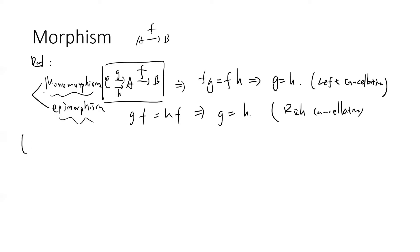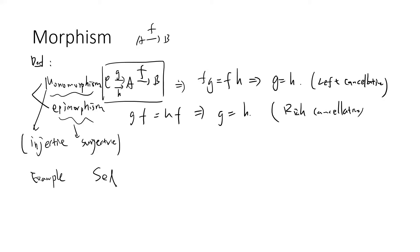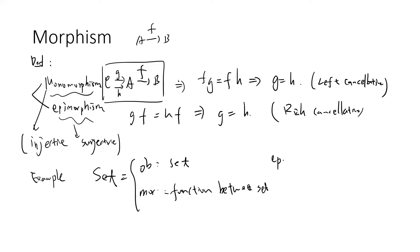The monomorphism should be viewed as injective and the epimorphism as surjective. A simple example: if you use Set as the category, the objects are sets and the morphisms are just functions between sets. From this, epimorphism means surjective and monomorphism means injective — a simple exercise for you to check.